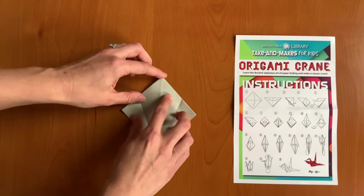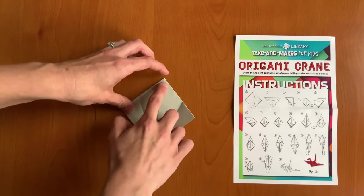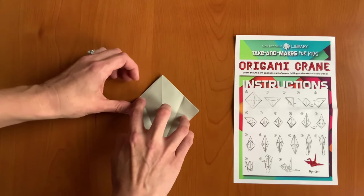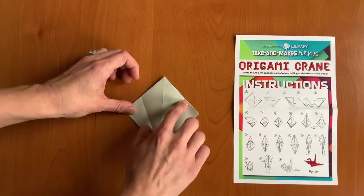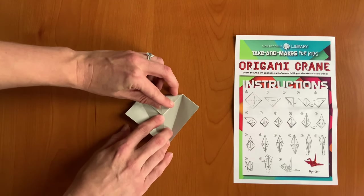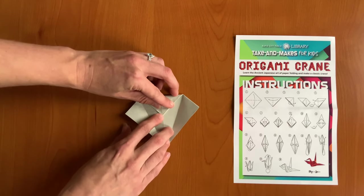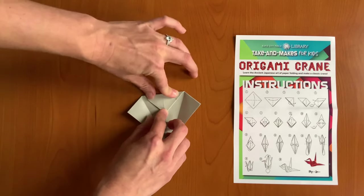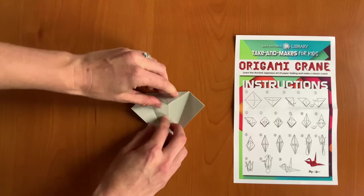Now we're going to take the top part of our triangle, of our square, and drawing an imaginary line from the top of this crease to the top of this crease. We want to make a triangle and try to get the point of the tip of that corner right there in the middle. That way you'll be even. And then unfold again.